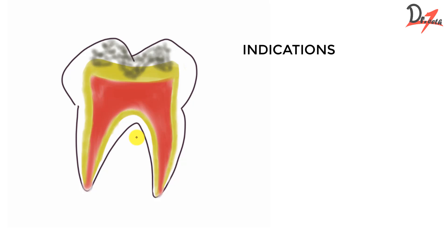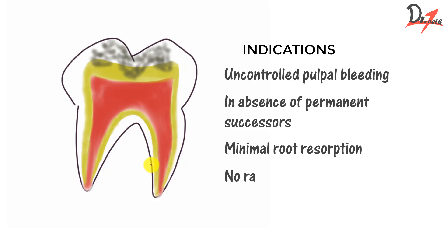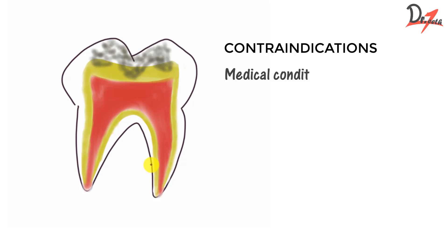Indications of pulpectomy: when we have uncontrolled pulpal bleeding; when there are no permanent successors and we want to preserve the primary tooth in place; there should be minimum root resorption; no radiographic bone loss; and adequate periodontal and bone support. Contraindications include medical problems like congenital ischemic heart disease and leukemia, as well as no or insufficient periodontal support leading to tooth mobility, and when the tooth structure is insufficient.